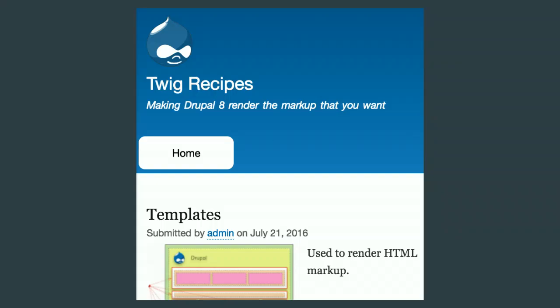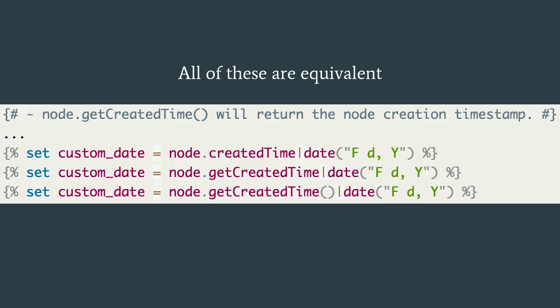After clearing the cache, that's the result — we modified the format of the date. Note that the dot notation is flexible: node.createdTime, node.getCreatedTime(), and calling the method directly are all equivalent, because Twig will add the get prefix and parentheses automatically. Also important: when using trans for translation, you can only print scalars inside it — you cannot call functions, filters, or tests within a trans block. That's why we create the custom_date variable outside the trans and use the variable inside it.